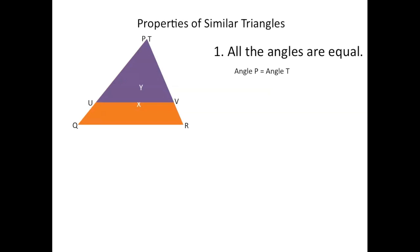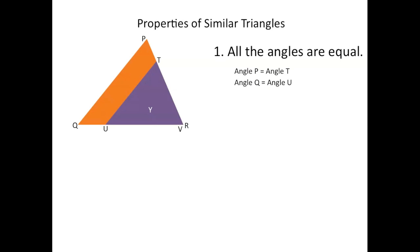Next, let's try Q and U. Again, they fall on top of each other perfectly, meaning that they're equal. And lastly, we're left with angle V and angle R. They fell on top of each other, showing that all three angles in both triangles are equal. So we can write out that triangle PQR is similar to triangle TUV.